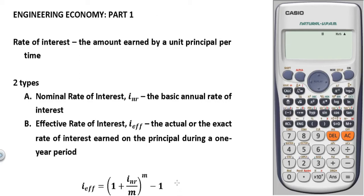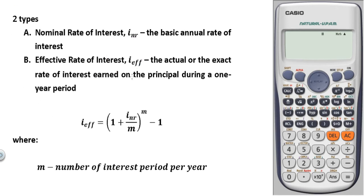Hello, welcome to this channel. I'm Marcus, and for today's topic: engineering economy. Let's begin with the rate of interest. Rate of interest is the amount earned by a unit principal per unit time, or simply, rate of interest is the cost of borrowing money. There are two types: the nominal rate and the effective rate of interest.